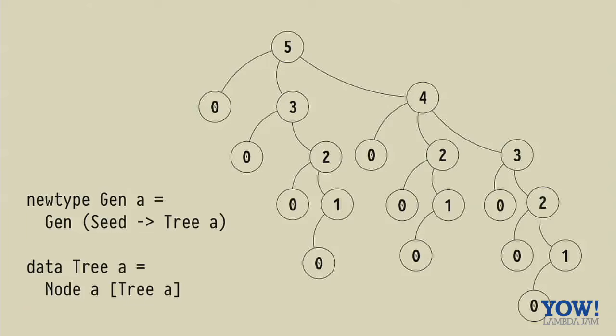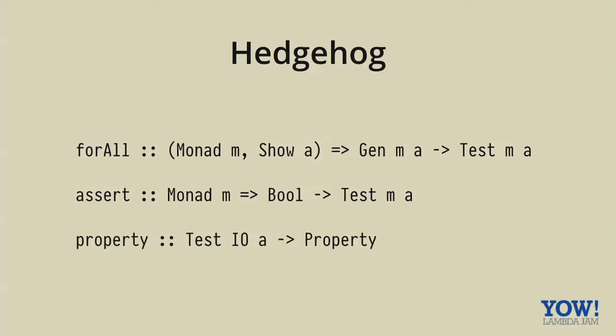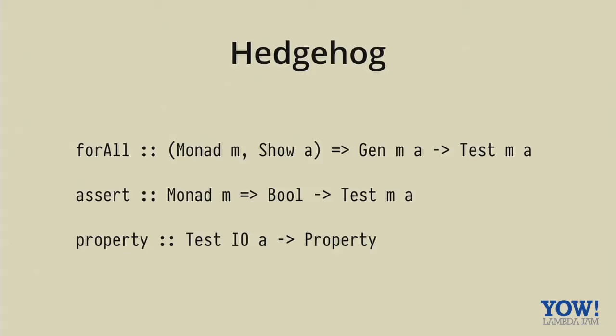So what about effectful properties? How do we deal with these kind of things? So because of hedgehog's architecture, if we want effectful properties, then we need to have effectful generators. So that means somehow we need to add effects to this tree somehow. Now it turns out that it's as simple as just adding a monadic effect to the tree. And so now we can have an effect at every node. And we're done, right? In hedgehog all properties are monadic. So the for all you would use it inside your property monad, assert works like it does in monadic QuickCheck, and you can use property to lift a test into a property. So what does this look like? So hedgehog property looks like this. So we can do some effectful thing and then we can generate some stuff and we still get shrinking.